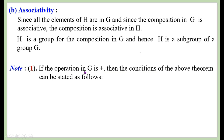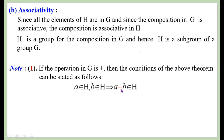If the operation in G is addition, then the condition of the above theorem can be stated as follows: a, b ∈ H implies a - b ∈ H. This is because the inverse of b with respect to multiplication is b⁻¹, whereas the inverse of b with respect to addition is -b. Therefore ab⁻¹ becomes a - b.